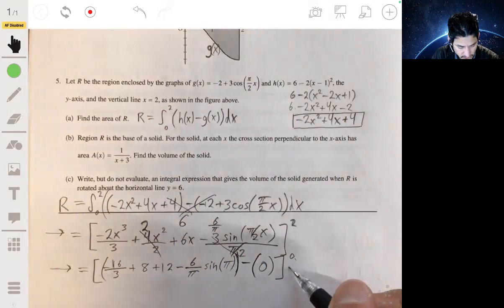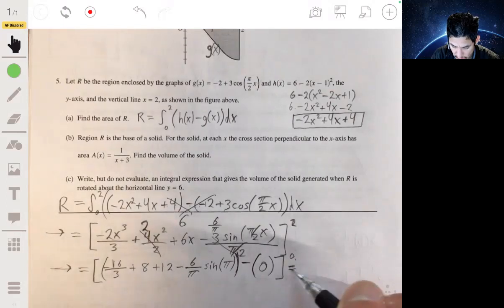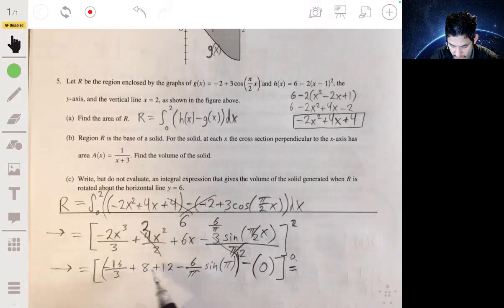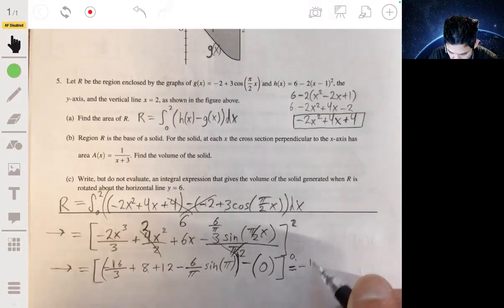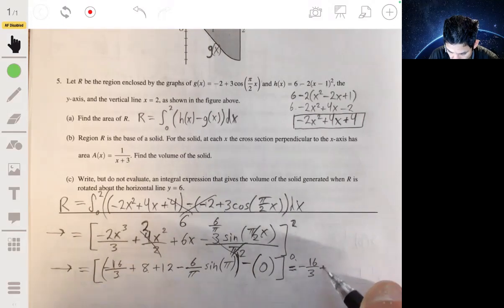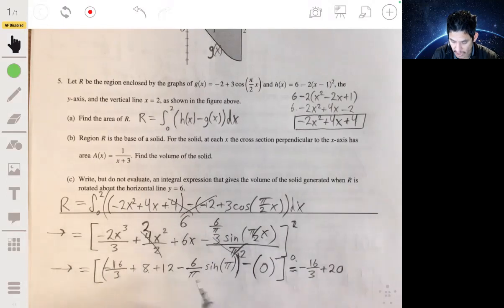And then now we just finish calculating this, 16 over 3 plus 18 plus 12, or I'm sorry, negative 16 over 3, plus 20.